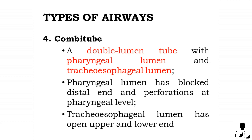Four: the combi tube. It is a double-lumen tube with a pharyngeal lumen and a tracheoesophageal lumen. The pharyngeal lumen has a blocked distal end and perforations at the pharyngeal level. The tracheoesophageal lumen has open upper and lower ends.